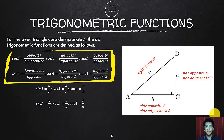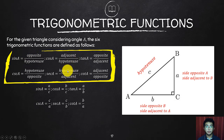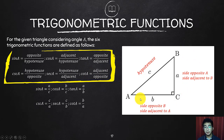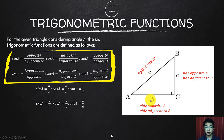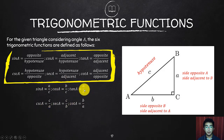For the given triangle and considering angle A: sine A = a/c, cosine A = b/c, and tangent A = a/b. The reciprocal functions follow directly from these three primary functions. Take the reciprocal of sine, cosine, and tangent to get cosecant, secant, and cotangent.